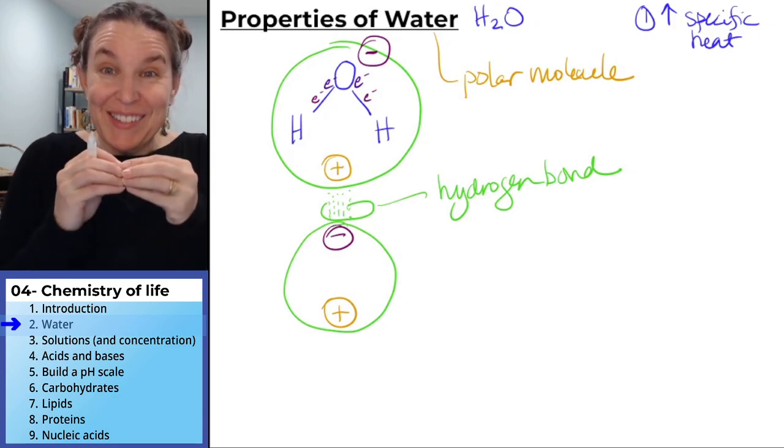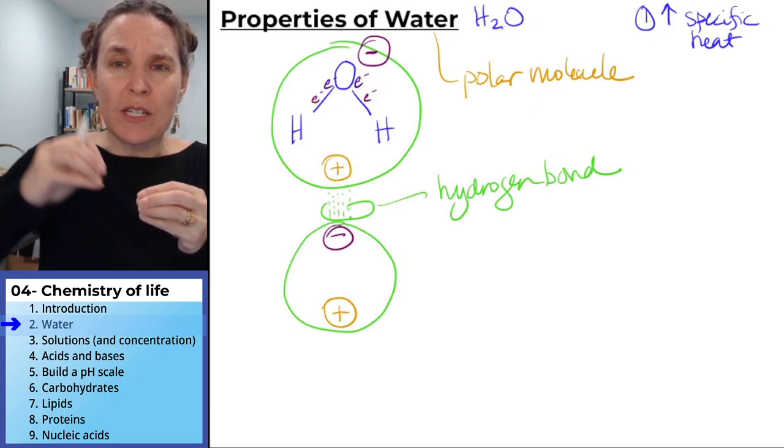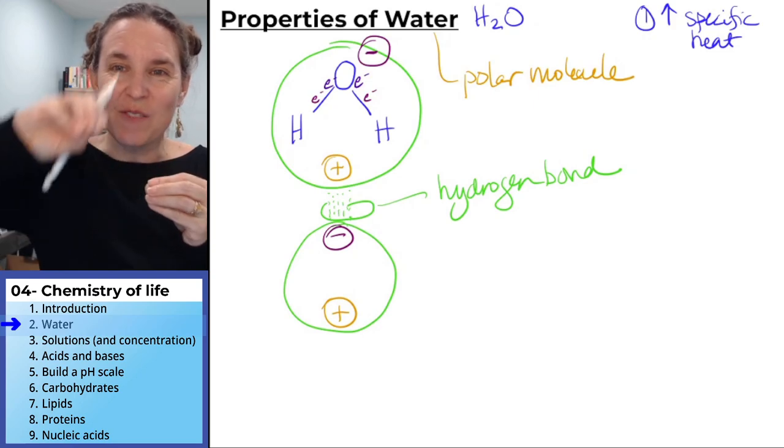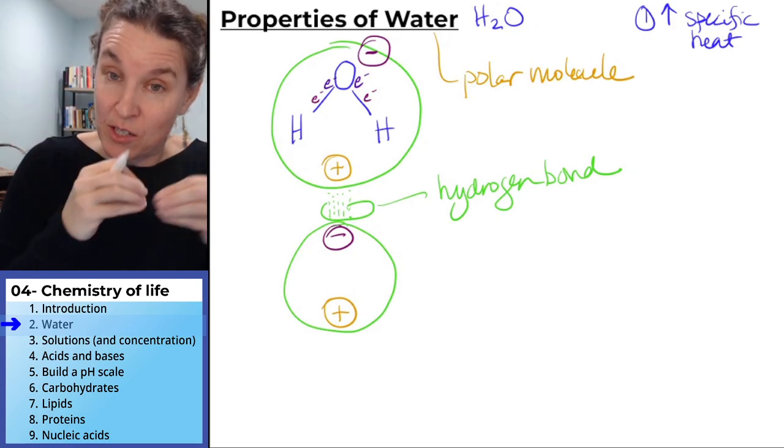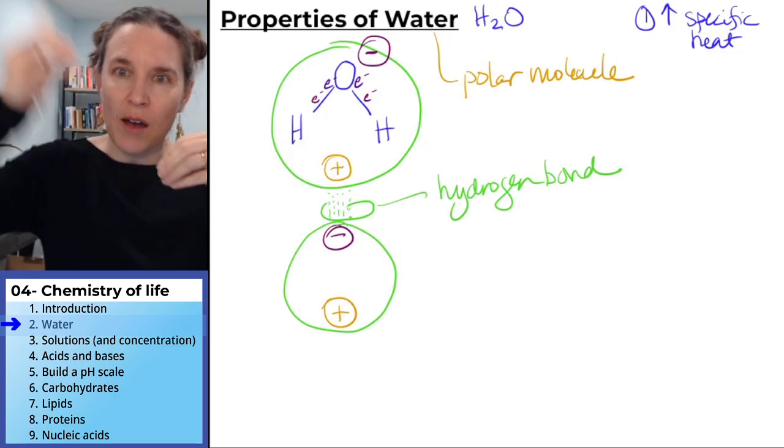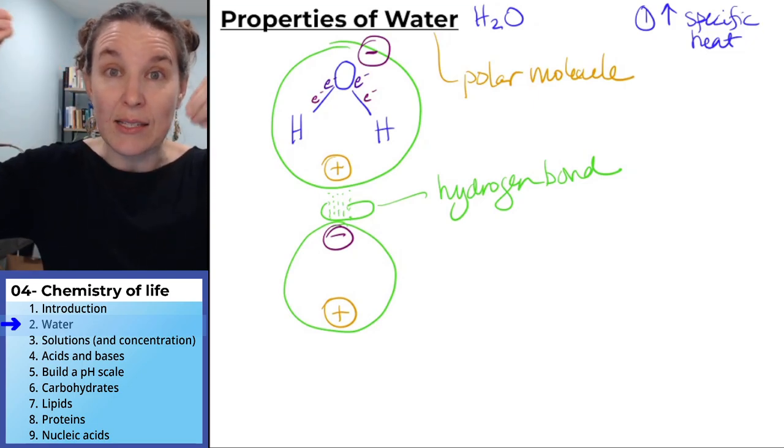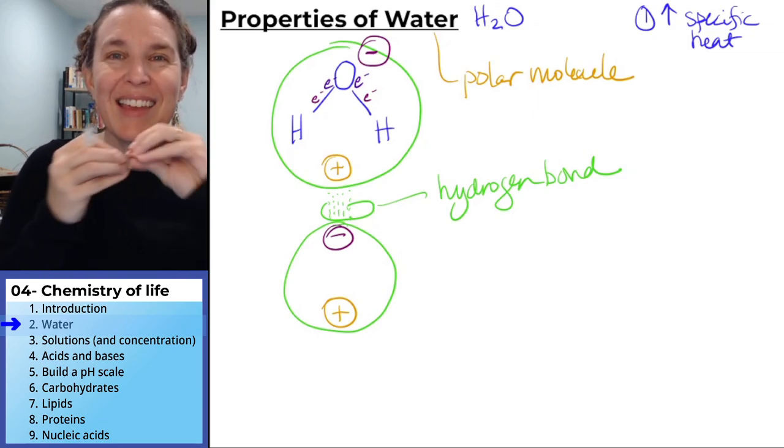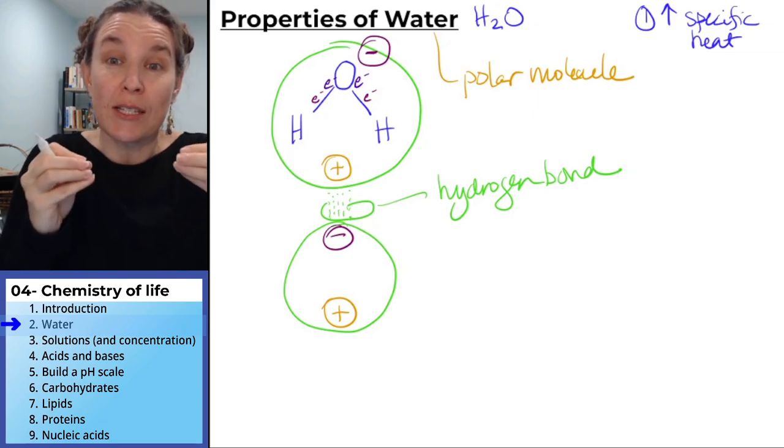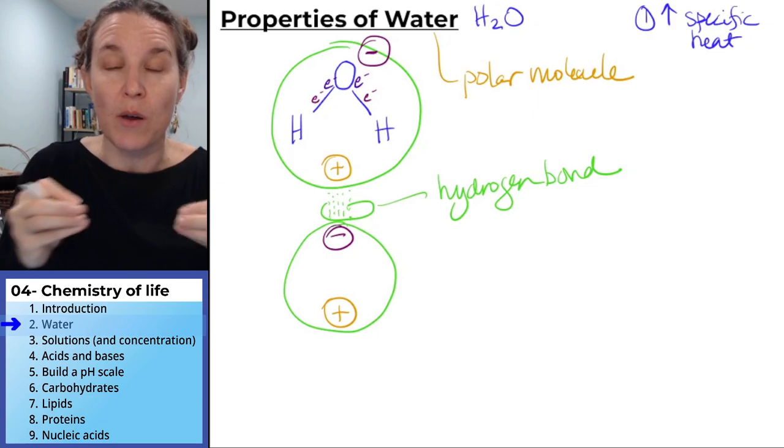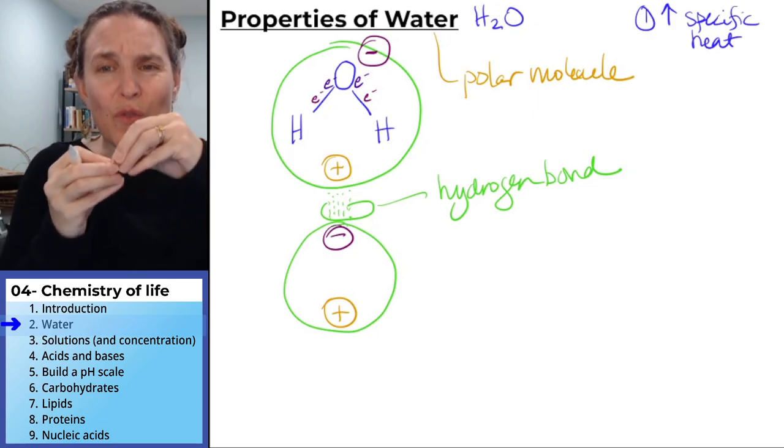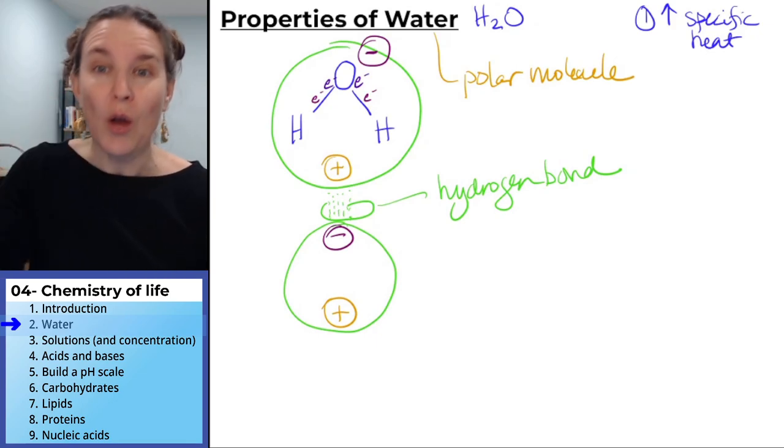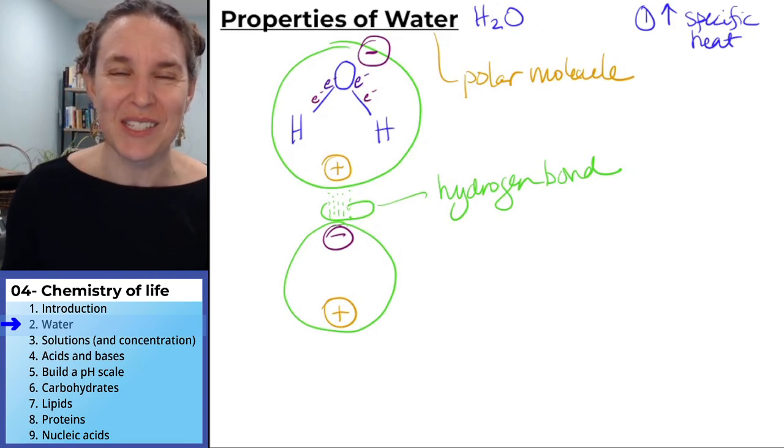If you think about liquid water, in order for it to become gaseous water to evaporate, it has to fly, it has to start moving faster. And then it has to fly off and become gas. And in order to do that, it has to overcome the hydrogen bonds. It's not just that it has to start moving around more, it has to move around more and break those hydrogen bonds. And that takes a significant amount of energy, which is how we end up with a high specific heat.